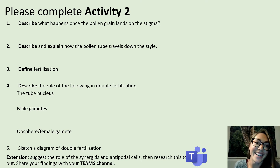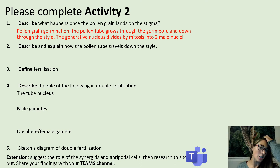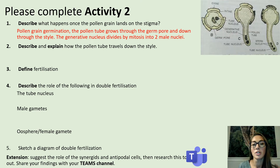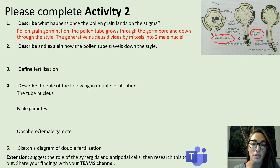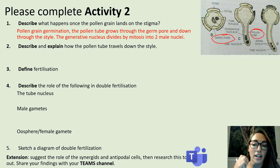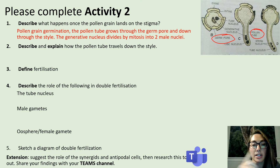Let's have a look at those answers. Describe what happens once the pollen grain lands on the stigma: the pollen grain germinates, meaning a pollen tube starts to grow through a germ pore. The pollen tube grows out of the pollen and down through the style, moving towards the ovule of the female reproductive part, where the female gamete is located.